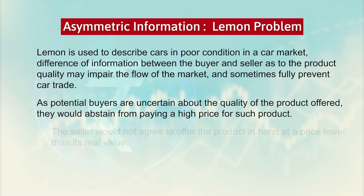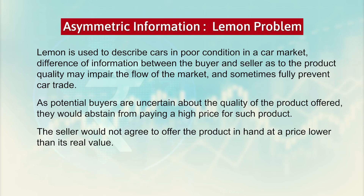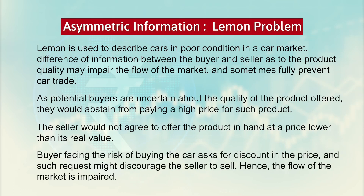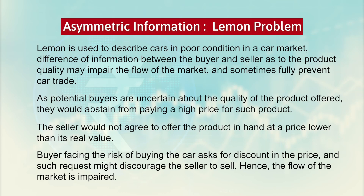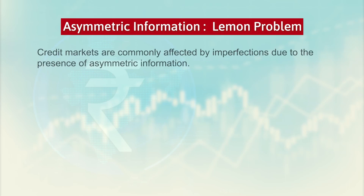This happens because the information set differs between buyer and seller. In case of the lemon problem, the seller would not agree to offer the product at a price lower than the real value — the seller will want to enjoy the profit and there is no room for compromise. Because of the risk of buying the car, asking for a discount might discourage the seller to sell. So if the buyer is willing to purchase only at a heavily discounted price and the seller is not willing to offer it, then this type of market mechanism fails. Credit markets are commonly affected by imperfections in the same way because the seller of the bond is more acquainted with higher information than the buyer, due to track records or the capacity of bonds to absorb shocks. Lenders might lack the necessary information to set the price of loans, which will be reflected in the borrowers' and the lenders' transactions.